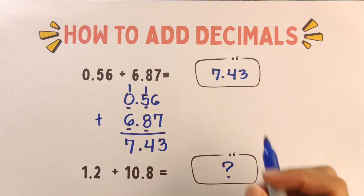And that's how to add decimals. Remember: line up the decimal points, add like whole numbers, and bring down the decimal point. Keep practicing. Thank you for watching, bye bye.